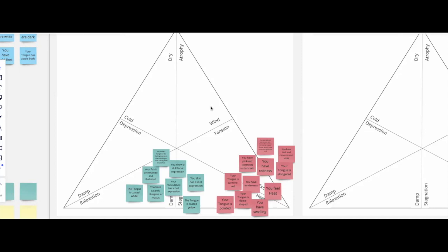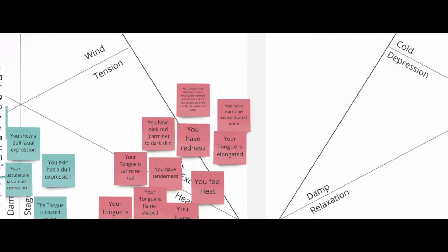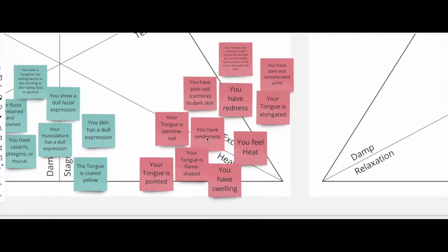Let's find out what they are about. The tissue state of heat signs point to a state of tenderness, redness in the tissue. You feel the heat, you have swelling, and it's a state of hyperfunction where the body is able to act and produce and do things.